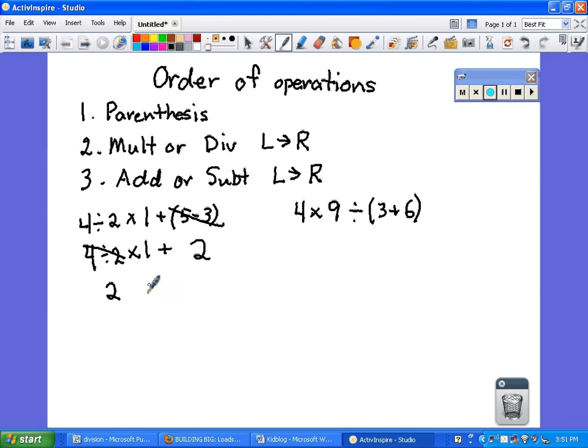We bring down the times 1 and the plus 2. Multiplication comes before addition, so we do 2 times 1, which is 2. Bring down the plus 2, and 2 plus 2 is 4.